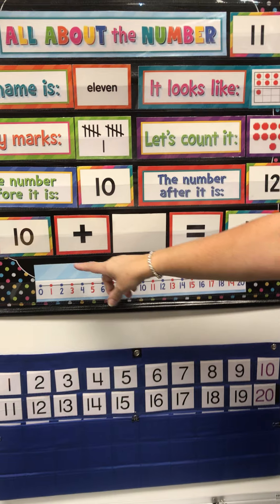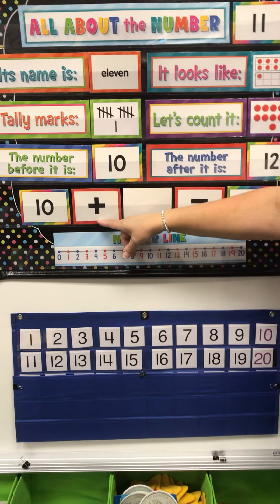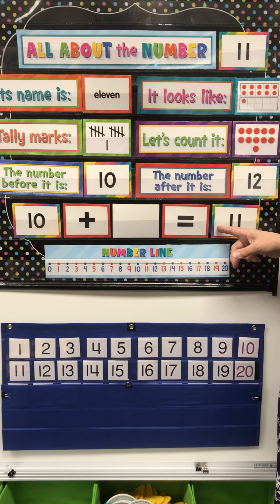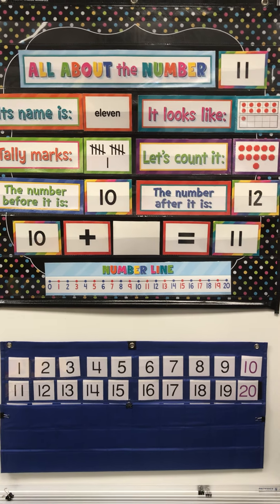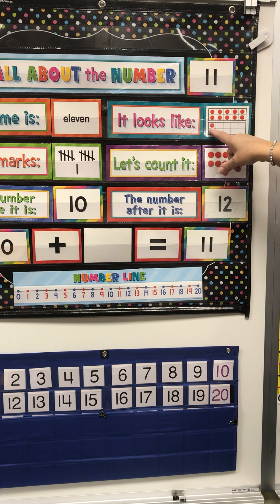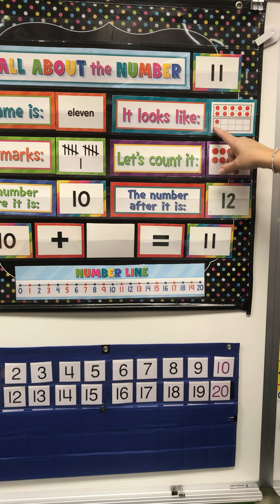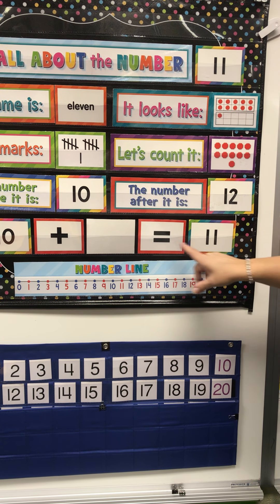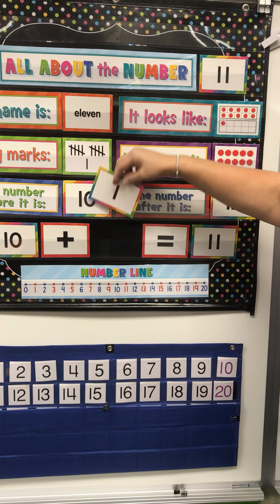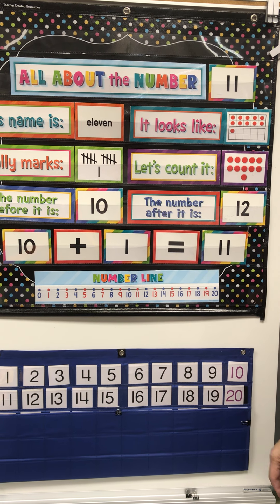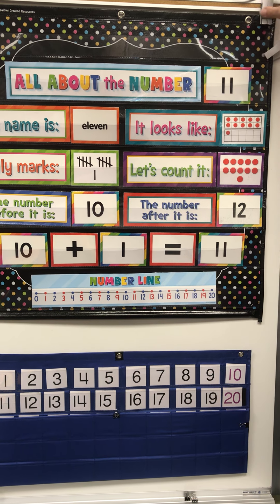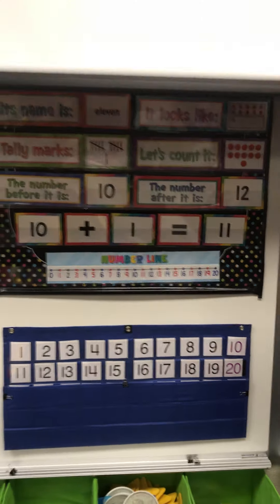Now, 10 plus something equals 11. Well, I'll give you a big fat clue. 10 plus how many more makes 11? There's one 10 and one 1. 10 plus one more equals 11. All right, get your binder. We are going to do the 11 page in our binder.